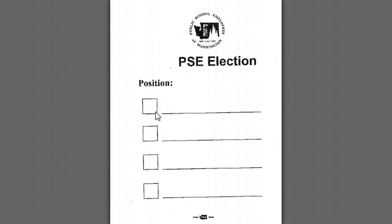Then the person using this form would actually check the box that is next to the name of the person they are wishing to vote for. That does it for this video. If you have any questions about how to obtain these documents, you can contact your field representative or any of the regional offices.